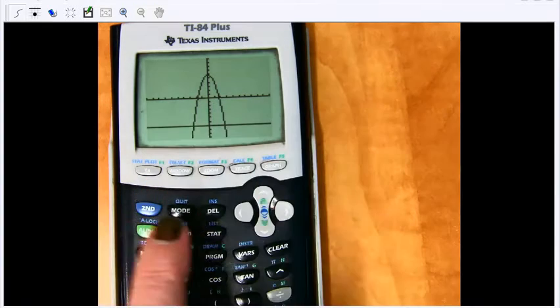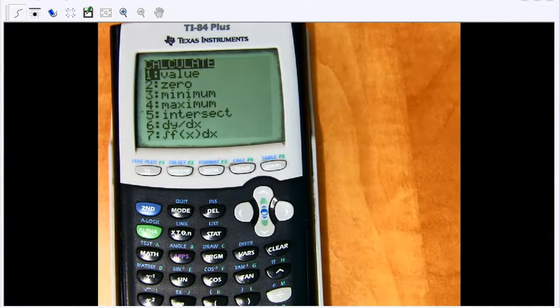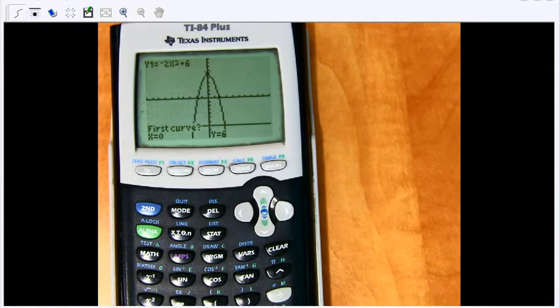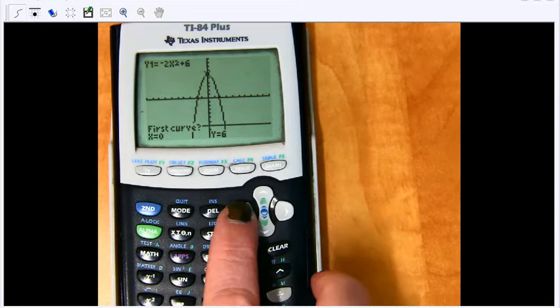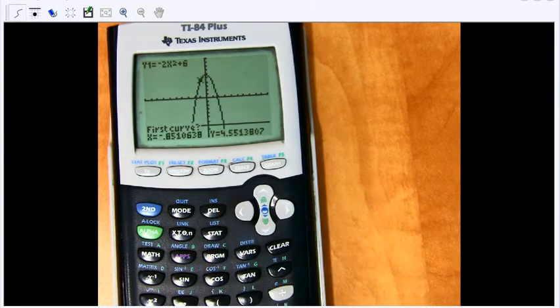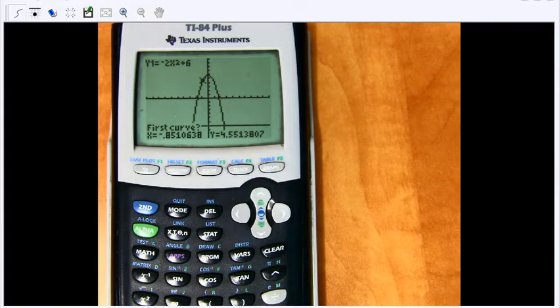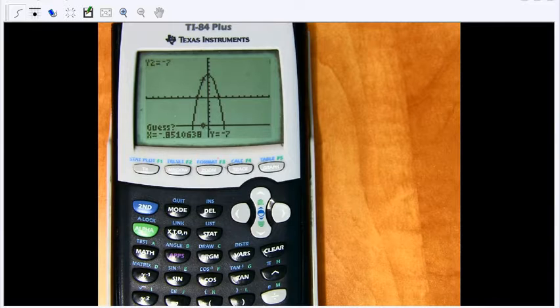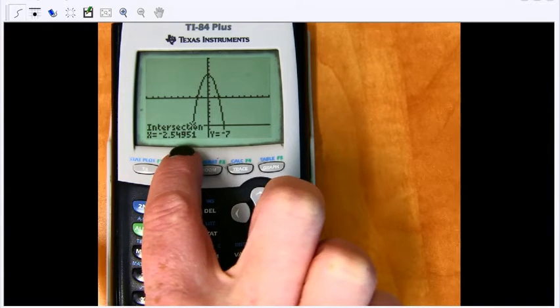Now to find those intersection points, I need to do second, trace, which gives us the calculator function. And I want to do number 5, intersect. I'm just going to arrow over a little bit to the left because I want to get that left intersection first. It says first curve. You can tell I'm on the parabola. Then it goes to the line. That's my second curve. And then I hit enter again to get that coordinate, and there it is. That's my intersection point.